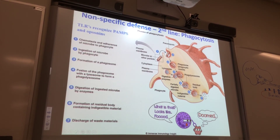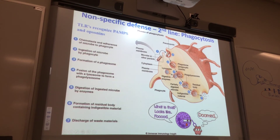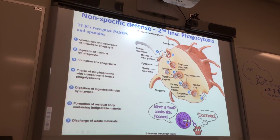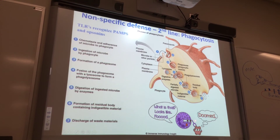In this cartoon, the foreign invader got coated with opsonins — these little half-circles are opsonins, could be complement proteins. This cell is going to recognize the foreign invader. What kind of cell is this? A phagocyte — specifically a neutrophil. You can tell from the cartoon by the multi-lobed nucleus. The neutrophil is going to recognize an antibody — the antibody bound to the opsonin that coated the foreign invader.